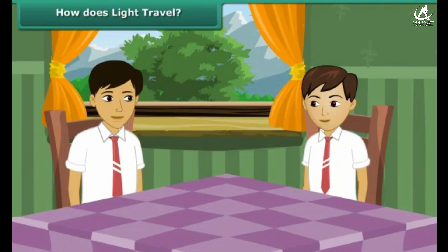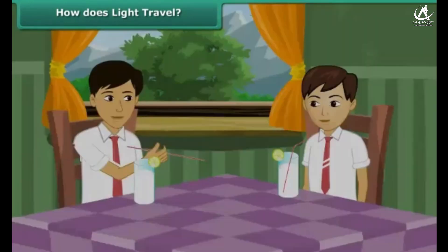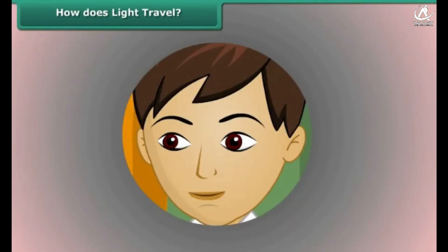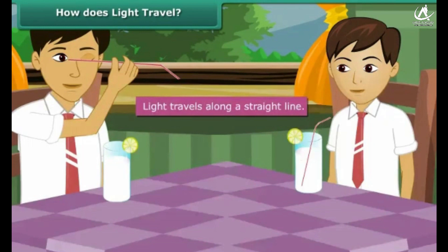You and your brother Ashish have just returned from school. Your mother gives both of you lemonade to drink. Your mischievous brother picks a straw out from the glass and tries to look at you through it. After a while the thin straw bends, and now when Ashish tries to look at you through it he is unsuccessful. This activity proves that light travels along a straight line.